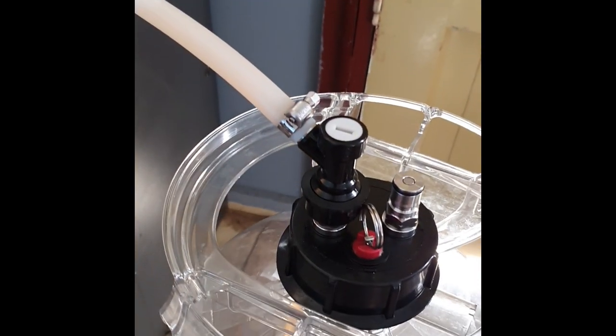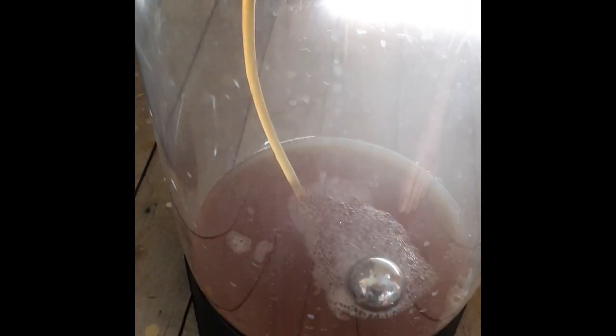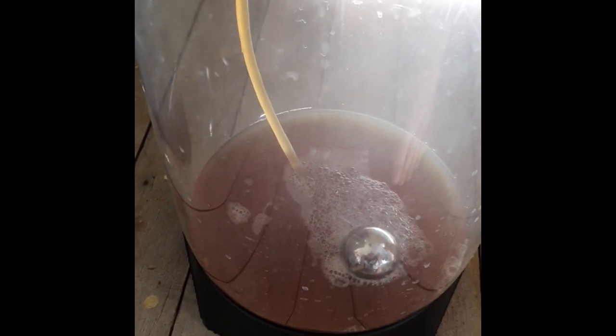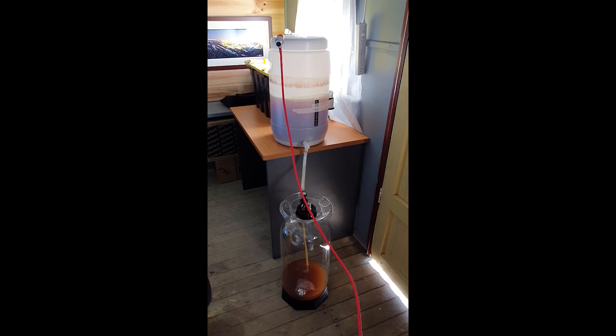Once the CO2 in the keg drains out completely, you're going to push that line in even harder into the tap so it's nice and secure. Turn your tap on, open your pressure release valve on your keg, and let the beer run in. That's it. That's all it takes to do an oxygen-free transfer from a regular fermenter into a keg.